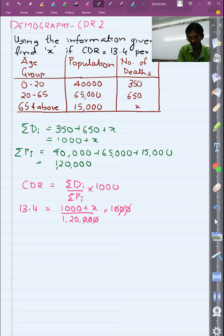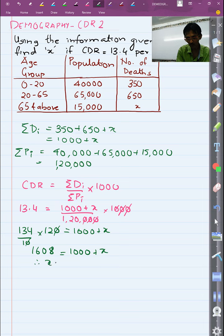Then 13.4 I write down as 134 by 10. We take 120 on the other side: 1000 plus X. Zeros cancel up. We multiply the two, we get 1608 equals 1000 plus X. So my X will be 1608 minus 1000 that is 608. These two problems will give you an idea of CDR.